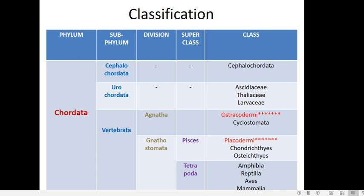Chordata is an independent phylum. It is divided into three subphyla: Cephalochordata, Urochordata, and Vertebrata. One basic chordate character is the presence of a notochord. In Cephalochordata, organisms possess the notochord from their head to the tail region, and it is present throughout their life. Such chordates are called cephalochordates.